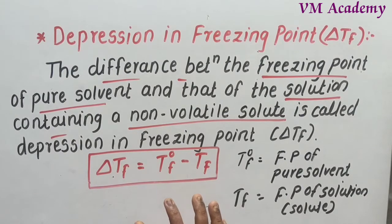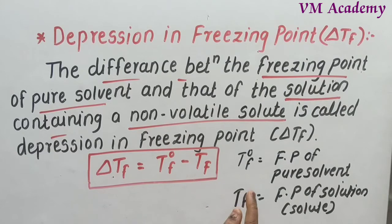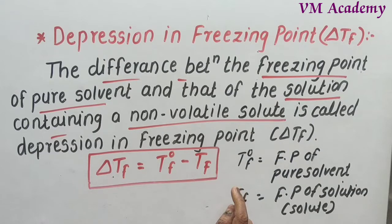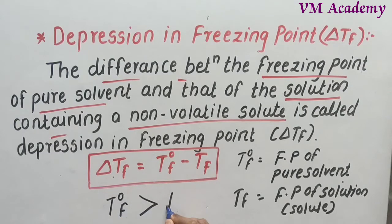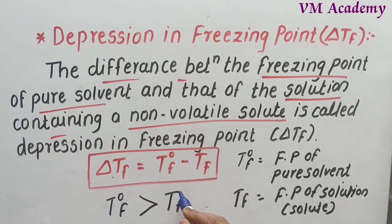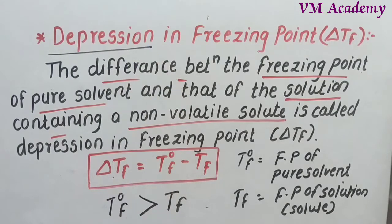From observation, i.e., from experiment, it was found that the freezing point of the solvent — in which non-volatile solute is present — becomes lower. So the freezing point of the pure solvent is always higher than the freezing point of the solution, which is decreased. This shows the depression.